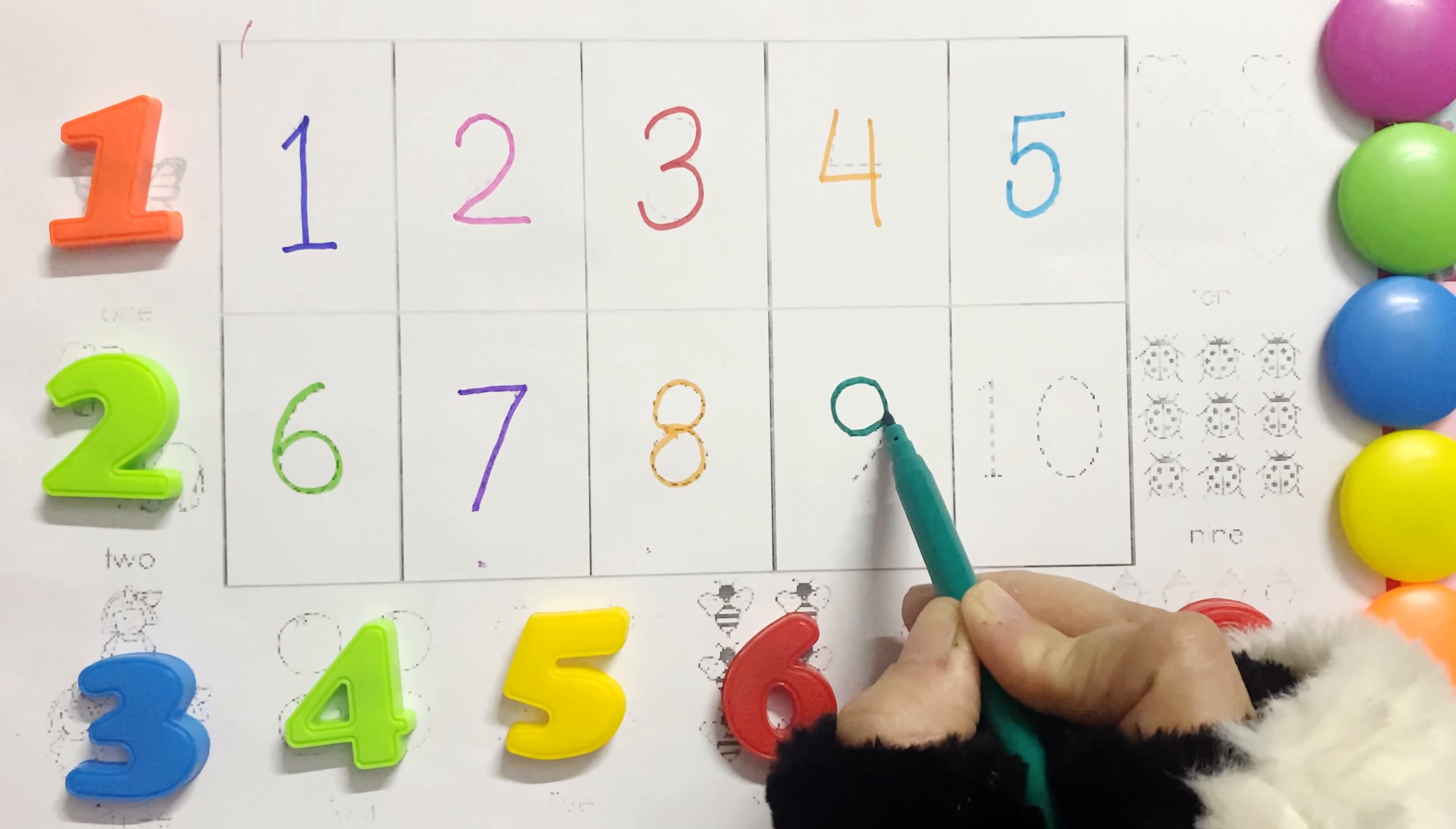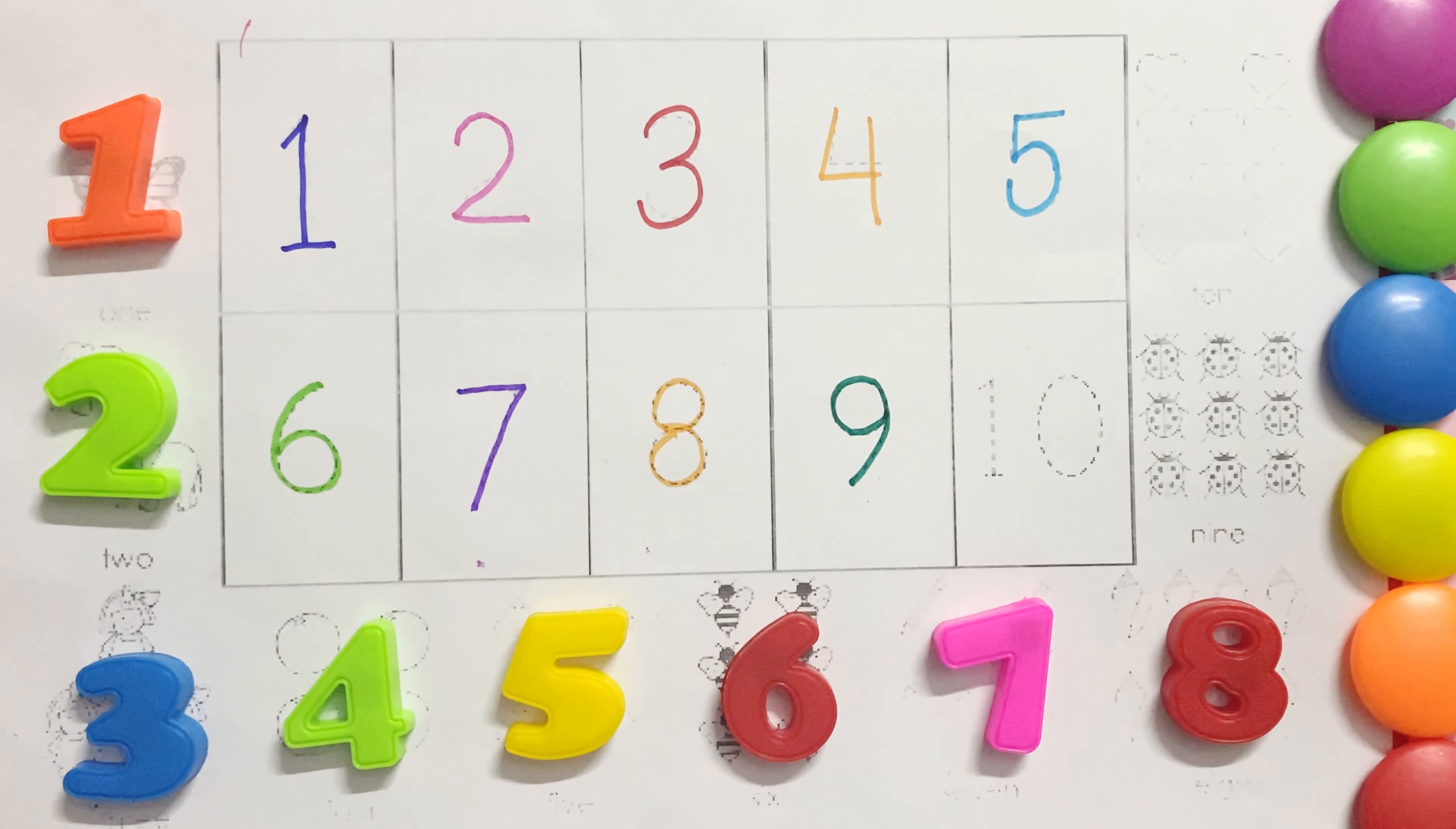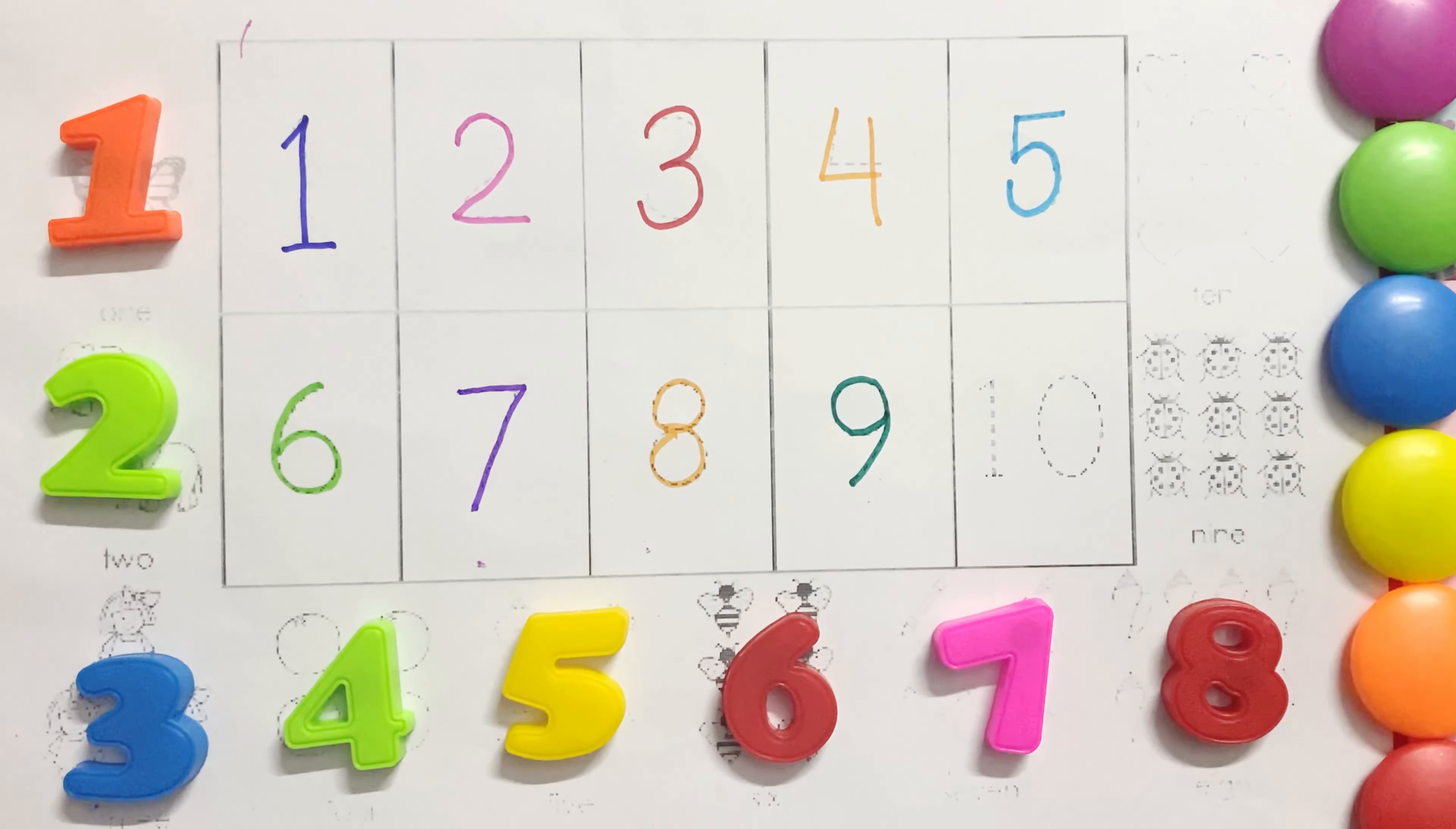Nine. Nine. Nine. Nine ladybirds. One, two, three, four, five, six, seven, eight, nine.